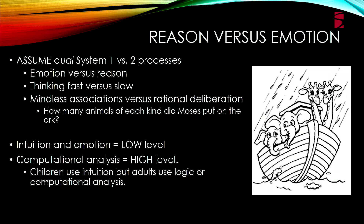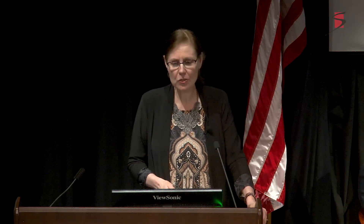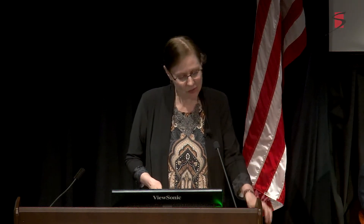The standard in my field is usually dual process theory — emotion versus reason, a kind of Cartesian dualism. We often think it's one versus the other. We talk about intuition and emotion together as a primitive system — this is how children think, intuitively. This is what Piaget said. Whereas adults, mature adults, scientists in fact, think in terms of computation and analysis.